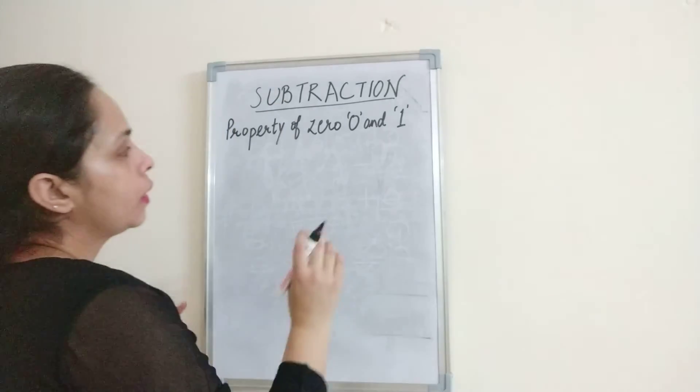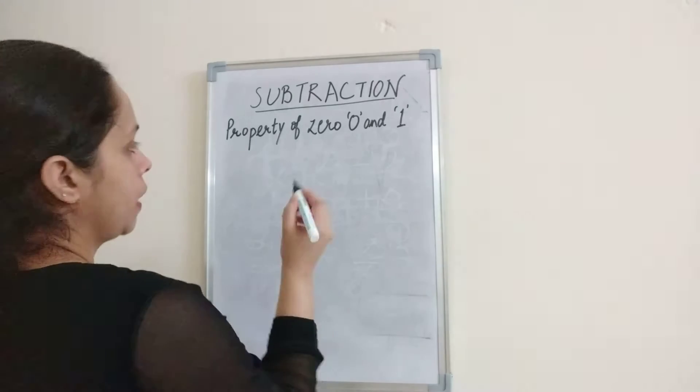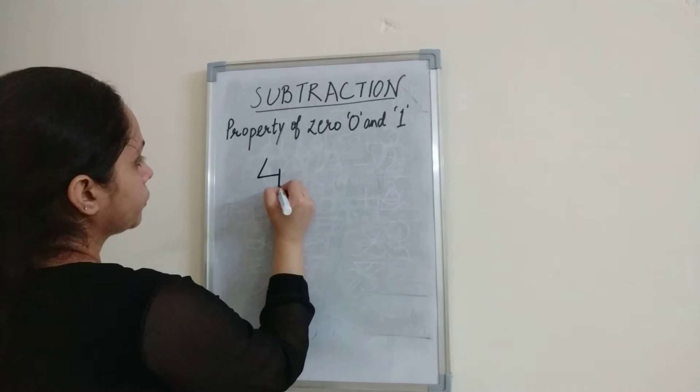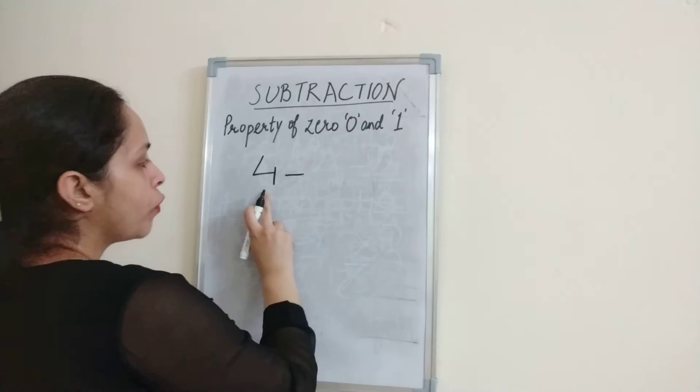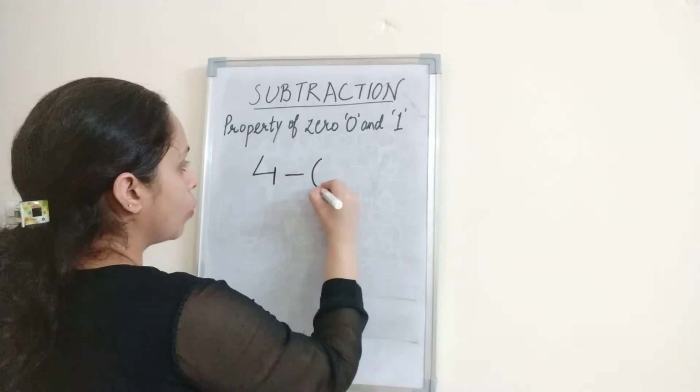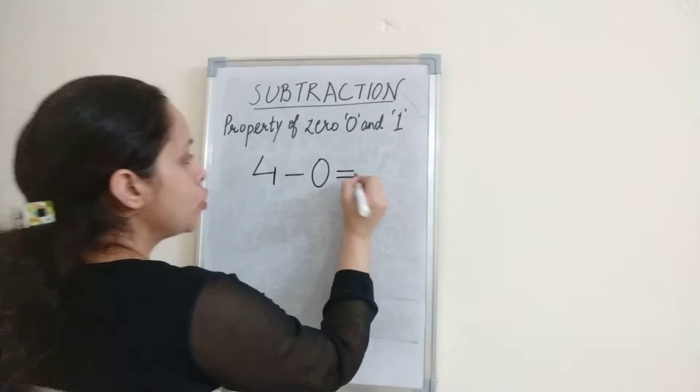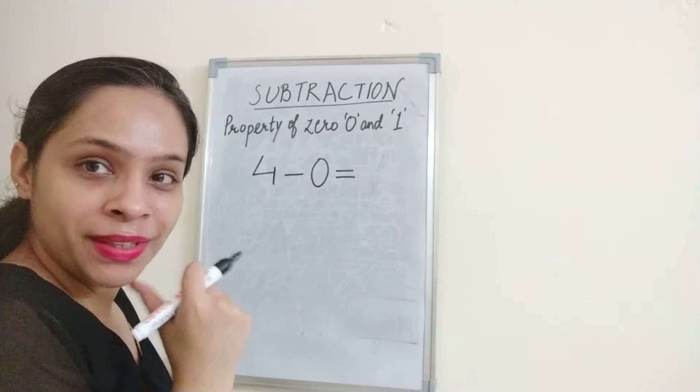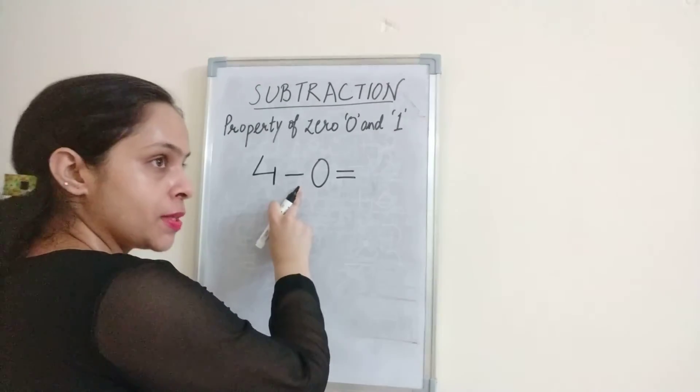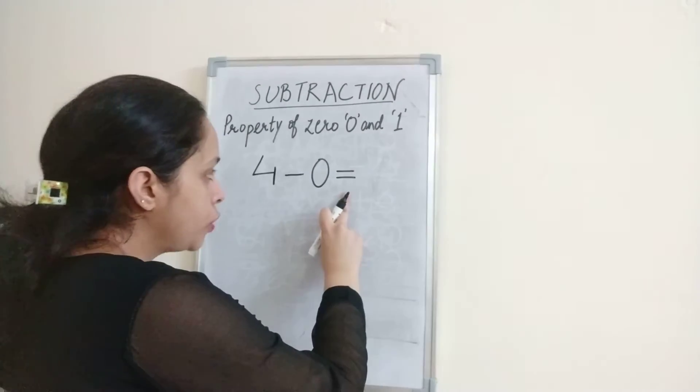So here, if you have a number of 4, if we have 0 minus, 4 minus 0 is equal to... What does this sign mean? Equal to. This is the sign of minus. This is the sign of equal to.